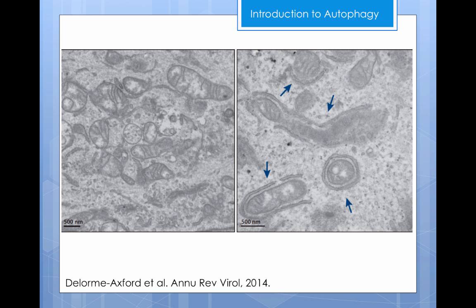To the left in this EM picture we see the morphology of a normal cell that has not undergone autophagy. On the right we see a cell that is actively undergoing autophagy. The arrows denote the double membrane autophagosome that is enwrapping a mitochondria.